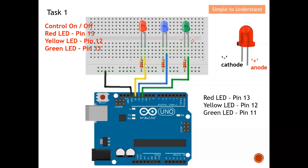The resistor controls the amount of current flow. Without a resistor, the LED may blow due to excessive current. With the resistor, the current is limited by the resistor value, so you must include one. To turn the LED off, simply put 0 volts at pin 13 — no current will flow and the LED turns off.